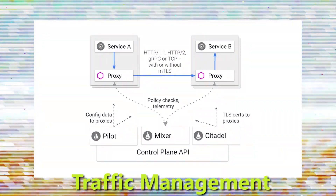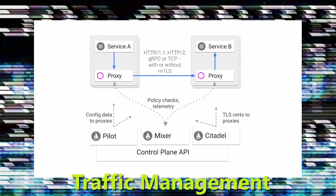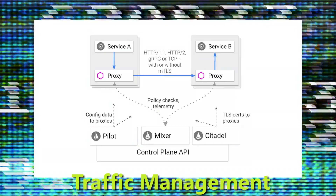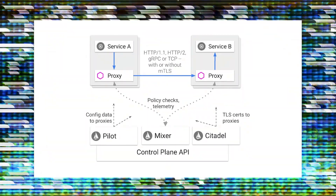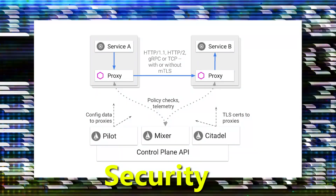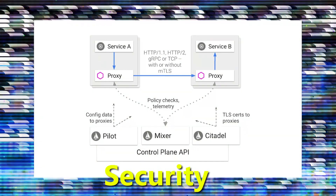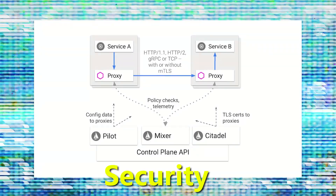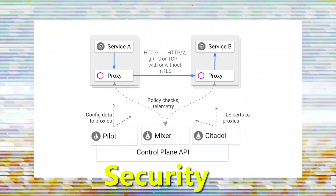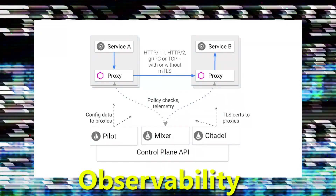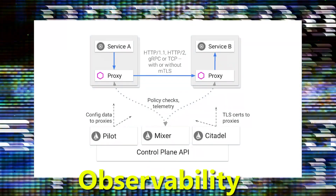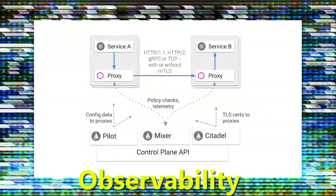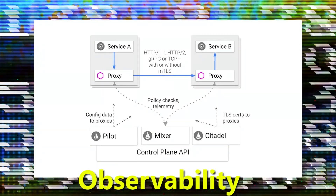Now let's talk about the features of Istio. The main feature is traffic management. Istio allows for advanced traffic routing, canary releases, and fault injection to test the resilience of our microservices. The next feature is security — it provides encryption, mutual TLS, identity and access management, and fine-grained control over communication between services. The third feature is observability: Istio offers robust monitoring and tracing capabilities and can generate detailed telemetry data to gain insights into microservices behavior.